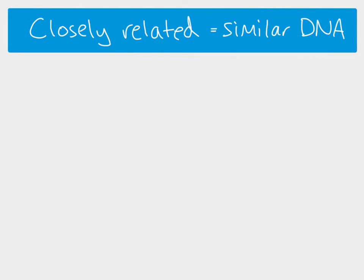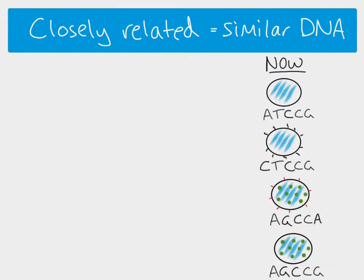Let's think about why that is the case. If we take some species which are alive now and look at their DNA sequence, we can work out which are more closely related to each other. Here we've got four imaginary organisms and a section of their DNA sequence. In reality, scientists would look at a much longer section — they could even look at the entire genome — although it's more common to take a section, often from the mitochondria, so we'll use mitochondrial DNA.